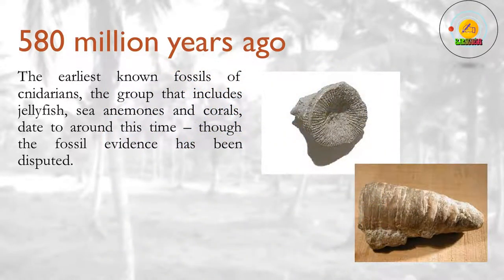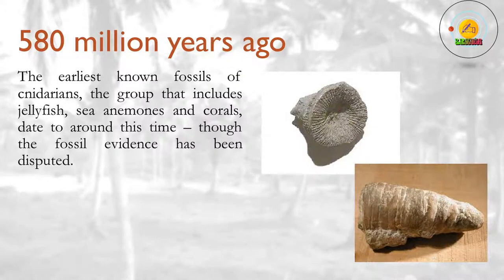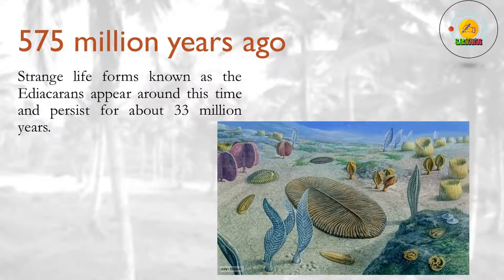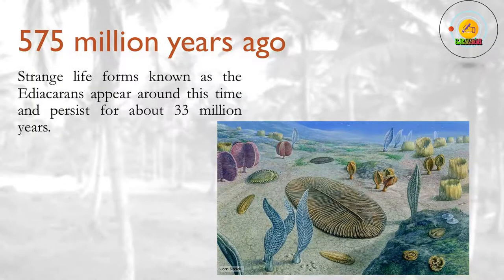580 million years ago? The earliest known fossils of cnidarians — the group that includes jellyfish, sea anemones and corals — date from around this time, though the fossil evidence has been disputed. 575 million years ago? Strange life forms known as the Ediacarans appear around this time and persist for about 33 million years.